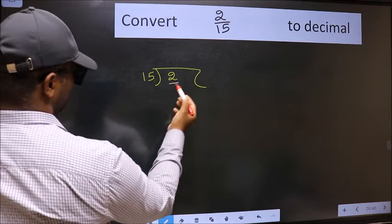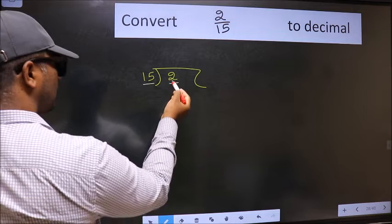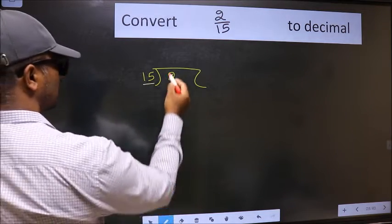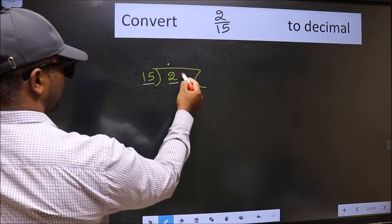Here we have 2 and here 15. 2 is smaller than 15. So what we should do is, we should put dot and take 0.